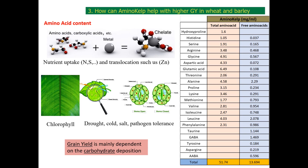With the appropriate supply of amino acids, the plant will have the units to form proteins needed for many different processes, including chlorophyll formation for higher photosynthesis rate, increased resistance to drought, cold, high salinity, pathogen stress, etc. When we combine increased efficiency in nutrient absorption and translocation with higher accumulation of sugars after photosynthesis, the result is an increase in yield. Grain yield is mainly dependent on carbohydrate deposition.